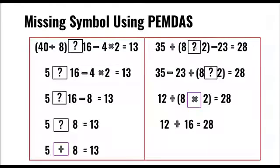but since we have a question mark, we're going to proceed from left to right. We do 35 minus 23, which is 12. We know 12 plus 16 is 28 and 8 times 2 is 16. So the multiplication symbol is the missing symbol.